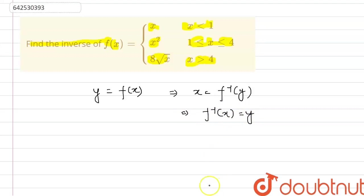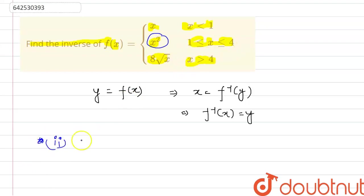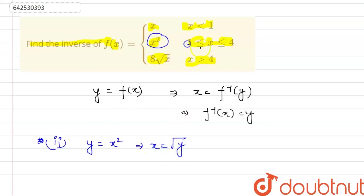We will similarly do this for our second case, that is, whenever x is between 1 and 4. Let us write down y as x². We will write down x in terms of y, so this will be equal to √y, since x lies between 1 and 4. We are only interested in the positive value, and thus we can write f inverse of y equals √y in this case.